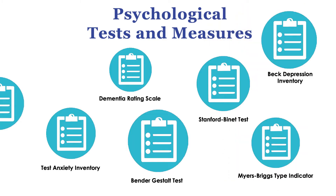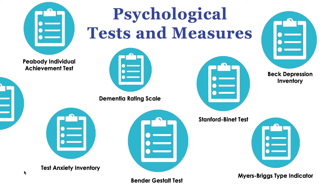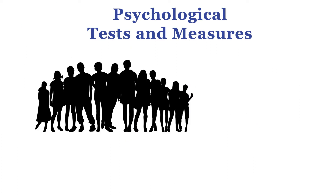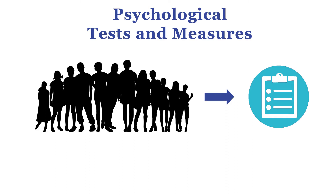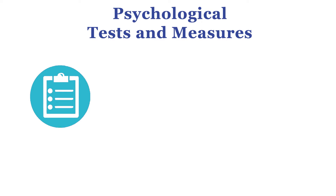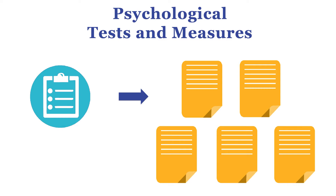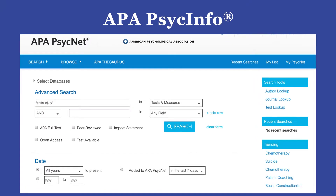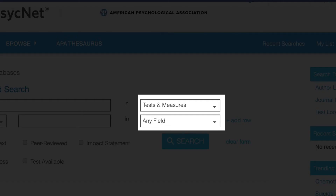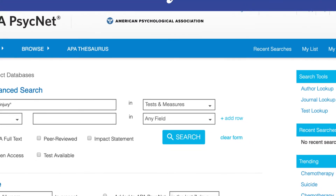As a psychology student or practitioner, you'll most likely need to find information about psychological tests and measures at some point in your career. You may have a specific population or topic you're researching and need to identify an appropriate research instrument, or you may want to see how a particular test has been used by other researchers. In this video, you'll learn how to use the Tests and Measures field in APA PsycInfo to accomplish both goals.